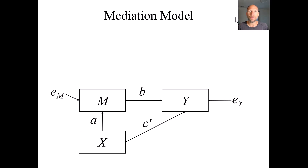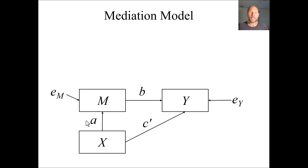I'm going to begin with a mediation model. You can see a path diagram here of the simplest possible mediation model, where we have three variables. In order to assess statistical mediation and also moderation, we need at least three variables. In this path diagram I have an independent or exogenous variable x that influences two variables: m, my mediator variable, and y, the outcome variable. This path model has three regression or path coefficients: the a coefficient, the b coefficient, and the c' coefficient. The a coefficient is the regression coefficient for the regression of the mediator m on x, and then b and c' are the regression coefficients for the regression of y on m and x respectively.